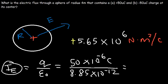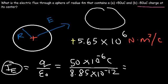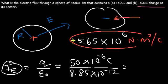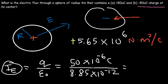For part B, the magnitude is the same, but with a negative charge inside the sphere the electric field enters the sphere — an inward flux — so the answer is negative 5.65 times 10 to the sixth newtons times square meters per coulomb.